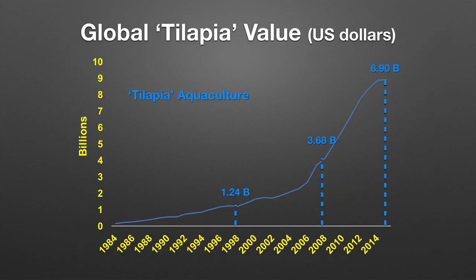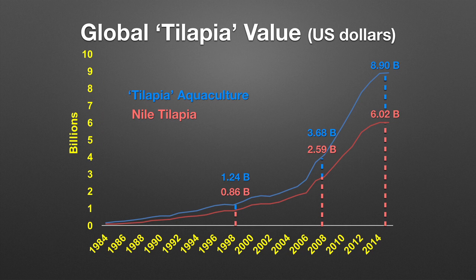Looking at global production in terms of dollar value — the farm gate value of tilapia — in 1997 the total tilapia value was $1.2 billion. In 2007 this increased to $3.6–3.7 billion, and more recently in 2015 this value has reached $8.9 billion. The value of Nile tilapia also shows the importance of this species: in 2015 it was $6 billion out of the total $8.9 billion reflecting total tilapia production.